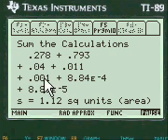And then you sum up all the calculations. If you write this on your paper, you're going to look like a genius. Minus 1.12 square units, which is the area of that definite integral.